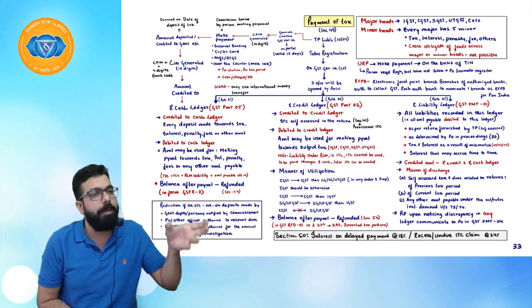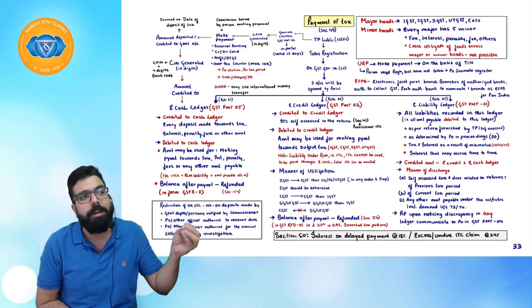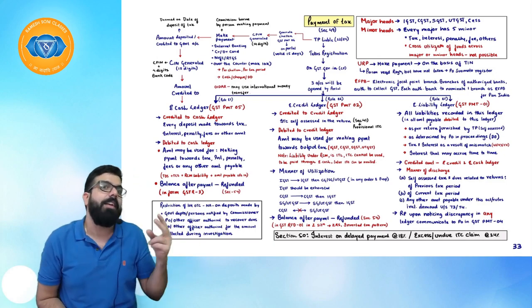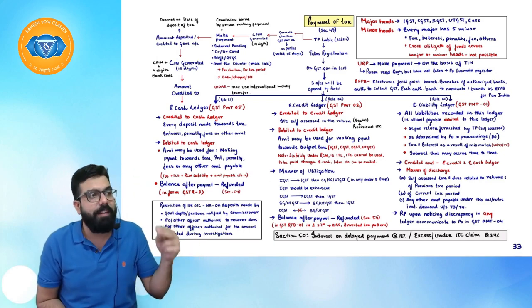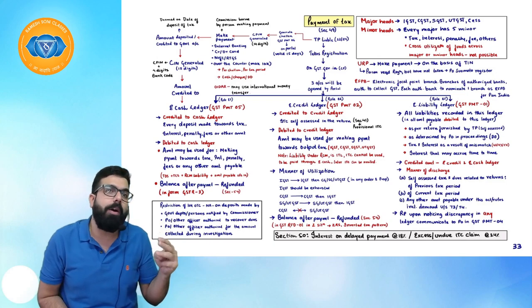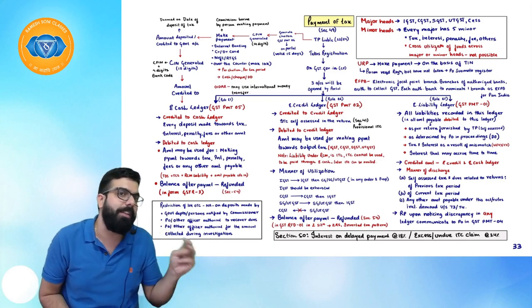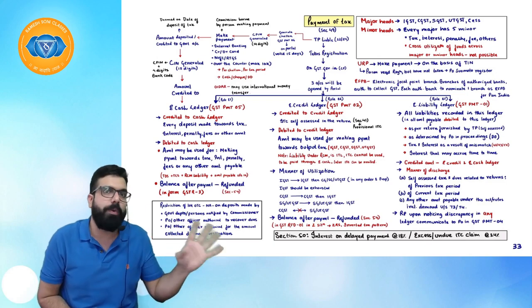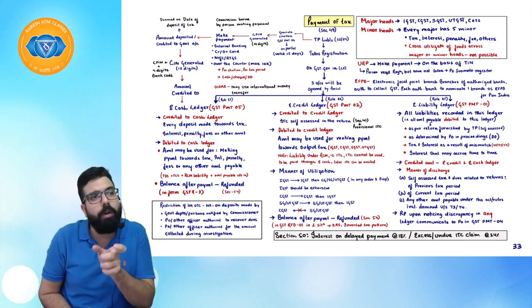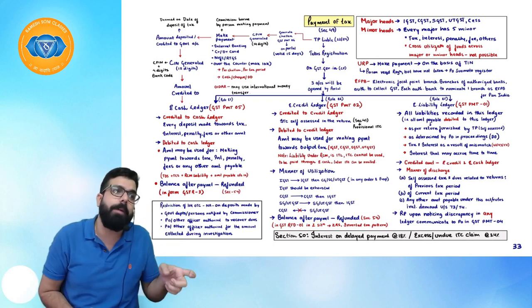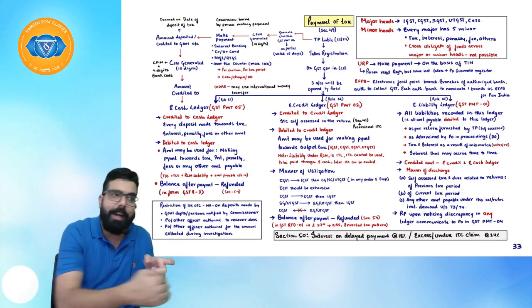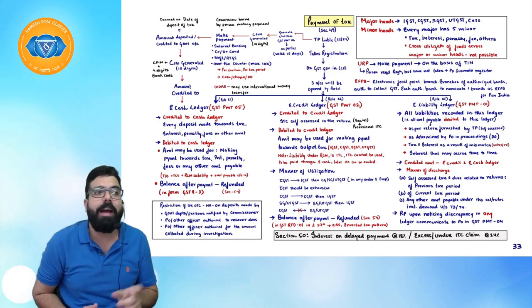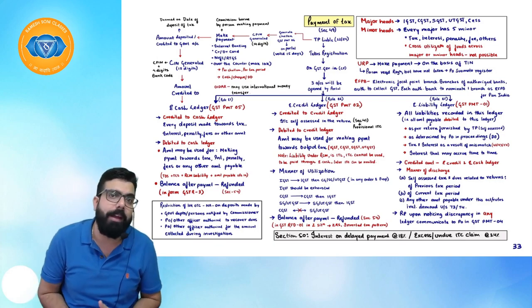In the e-liability ledger there will be a debit. What are the things debited in the e-liability ledger? Whatever is your self-assessed tax, whatever amount is raised in the demand order, whatever amount results from mismatching, and any interest which may accrue from time to time. That amount will be paid through the e-credit ledger and then through the e-cash ledger.